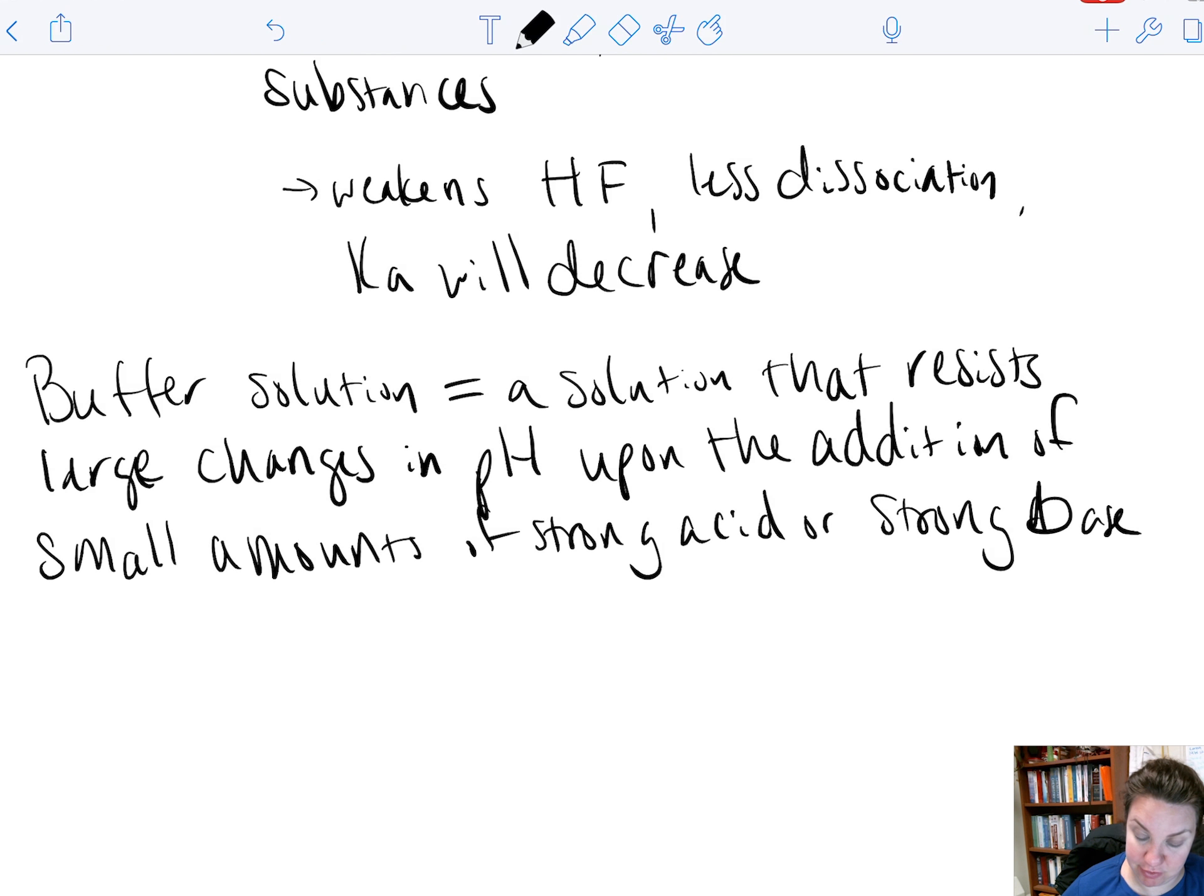So some examples of some buffers that you should already know. Blood. Blood is a buffering system. It does not change pH very readily. We actually need to keep it in a very narrow range, 7.35 to 7.45 or we get acidosis or alkalosis. So we want to keep in that specific range within blood or we get very, very sick. So it's a good thing that's a buffer. And another one is the ocean. Ocean is another example of a buffering solution. Again, we need to resist those changes in pH or all of our sea life will die.